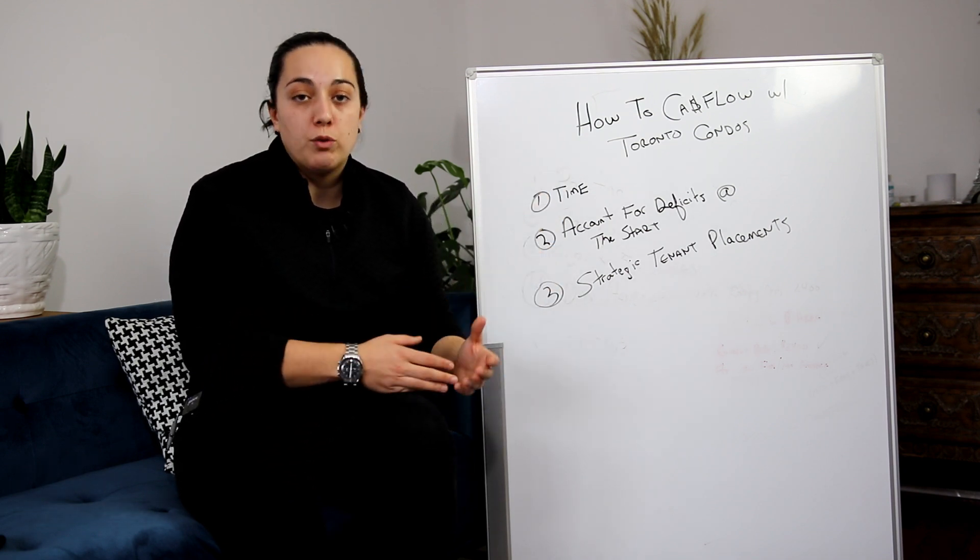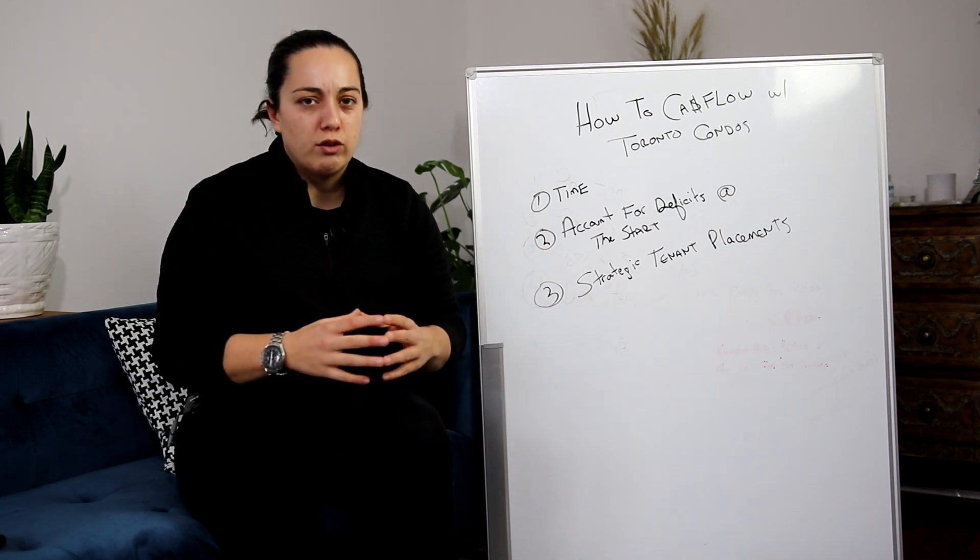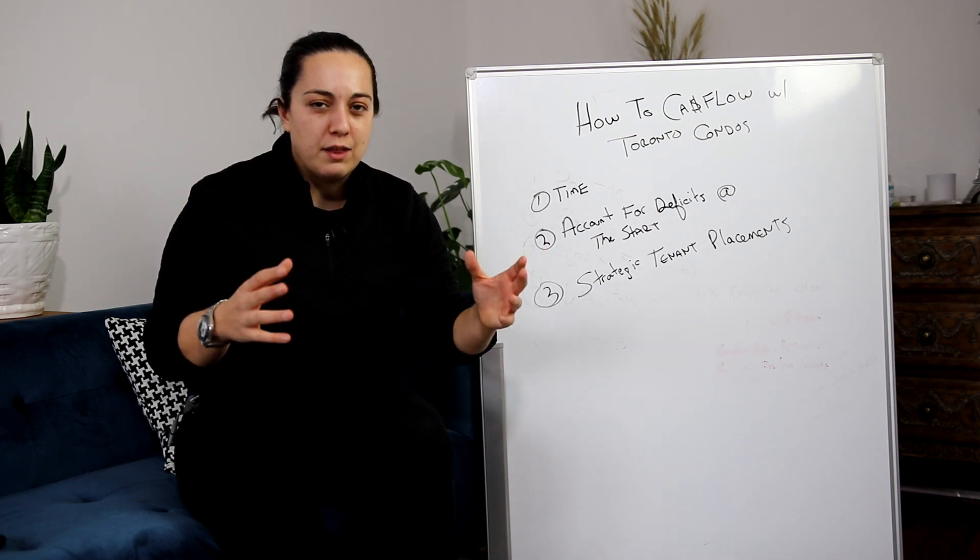The second thing is to make sure that you account for deficits at the beginning. As human beings we try to avoid pain, right? We want to do everything that we possibly can to avoid pain, and one of those pain points for us is losing money. That's a huge one for people.